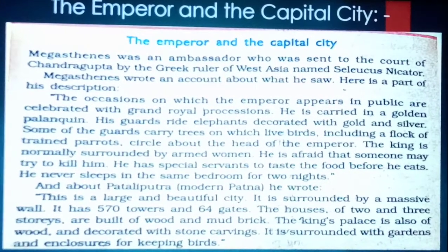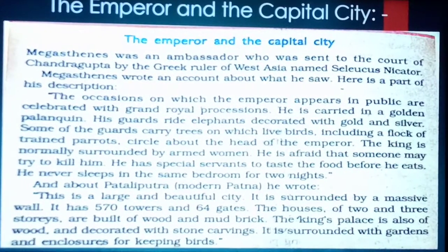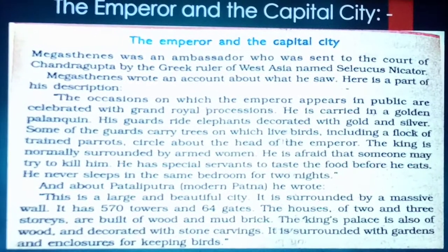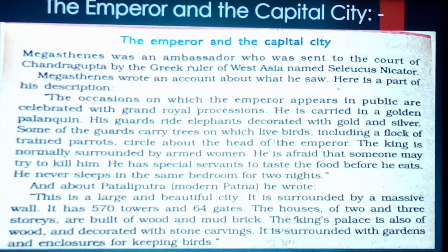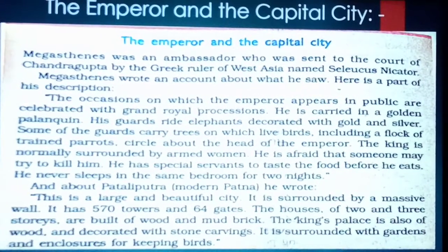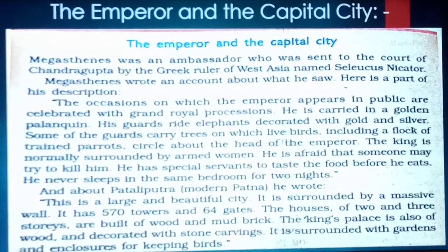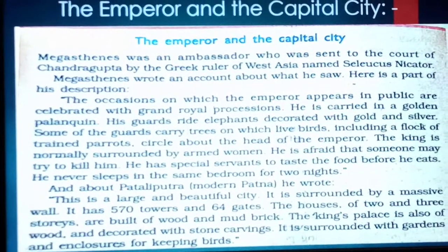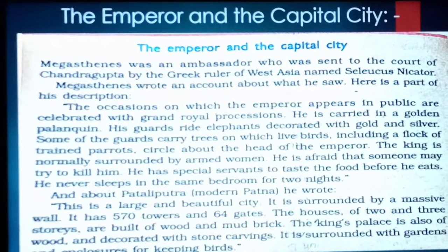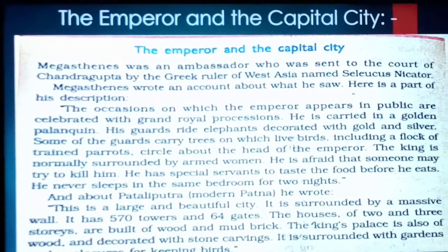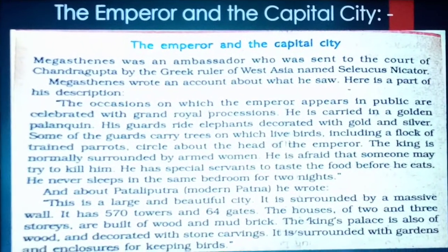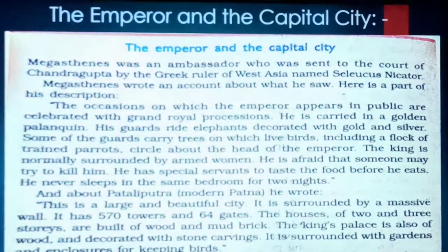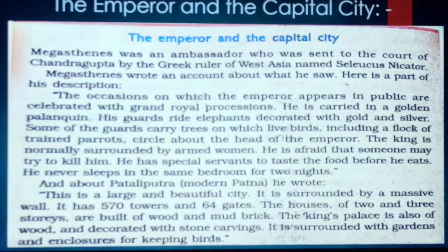There is an incident about when Chandragupta Maurya visited the public — he appeared before people and they celebrated with a grand royal procession. This information comes from Megasthenes' Indica, which states that on special occasions the emperor appears in public and it is celebrated with grand royal processions — he went out with a huge crowd, like a grand mela.